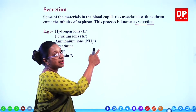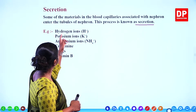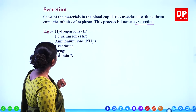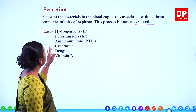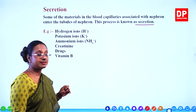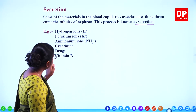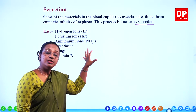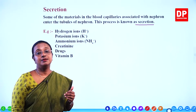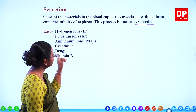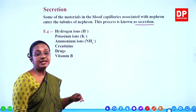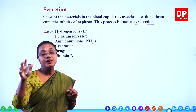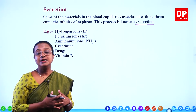Here are the parts of the urinary system again to remind you: two kidneys, a pair of ureters, the bladder, and the urethra. Substances are filtered, reabsorbed, and secreted. When there is too much water in the body, more water is excreted with urine; when there is not enough water, more water is reabsorbed and urine output decreases. Based on the condition of the body, the amount of urine produced will vary.